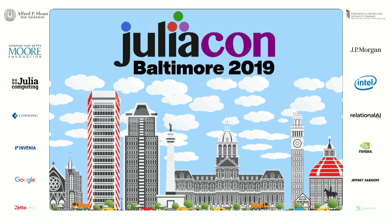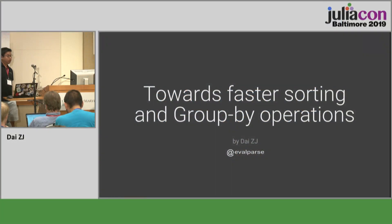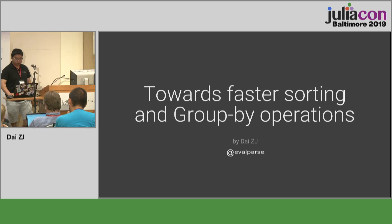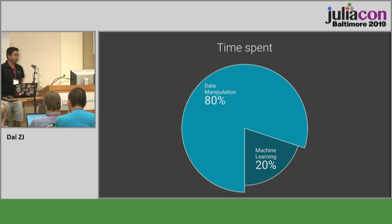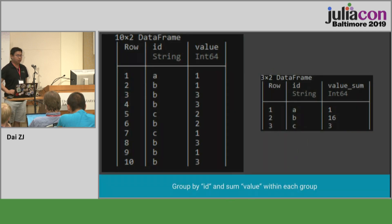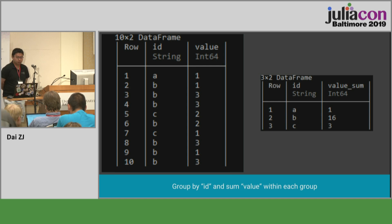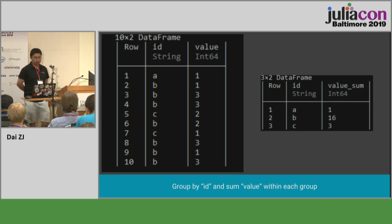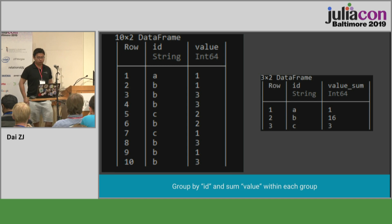Next up we have ZJ, who will be talking about faster sorting and group by operations. I work in the data field and as a data scientist, I spend 80% of my time manipulating data, so I thought it makes sense to be really good at doing that. Basically, I have a dataset on the left-hand side and I'm grouping by the ID column and summing up the value — the result of that group by operation is shown on the right-hand side.